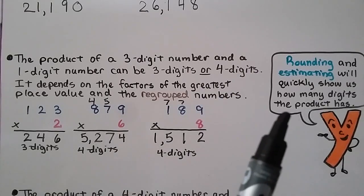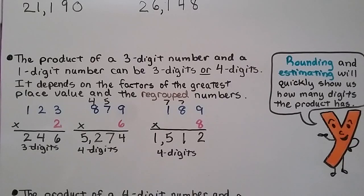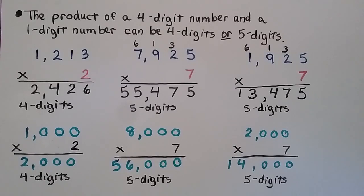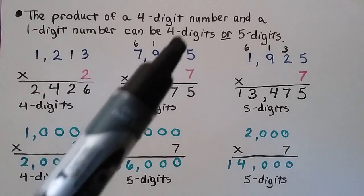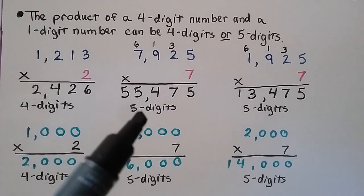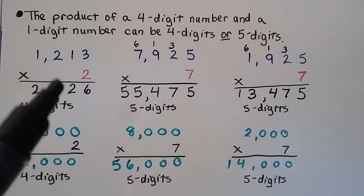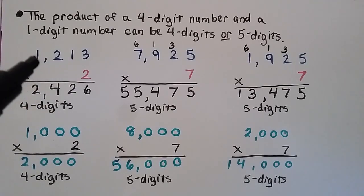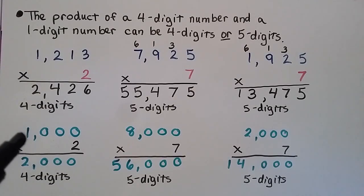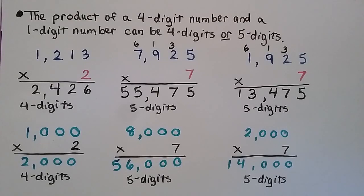Rounding and estimating will quickly show us how many digits the product has. The product of a 4-digit number and a 1-digit number can be 4 or 5 digits. To know how many digits there are, it's much quicker to use estimation. For example, the 2 tells the 1 to stay the same, so we estimate 1,000 — and 1,000 times 2 is 2,000, which is 4 digits.